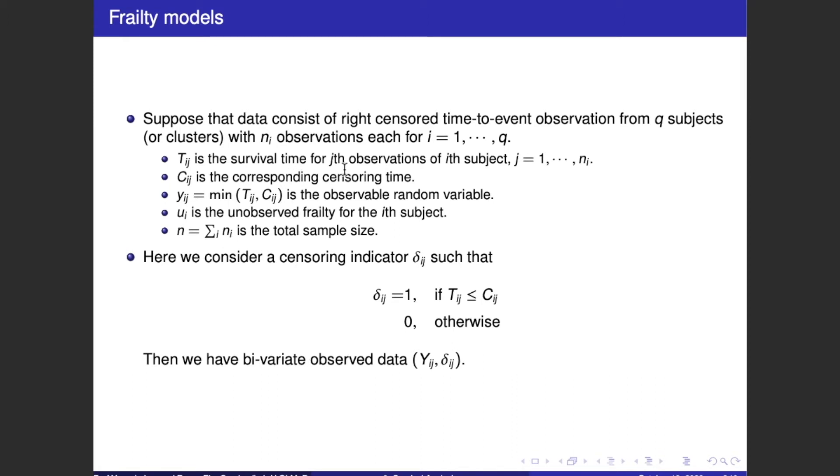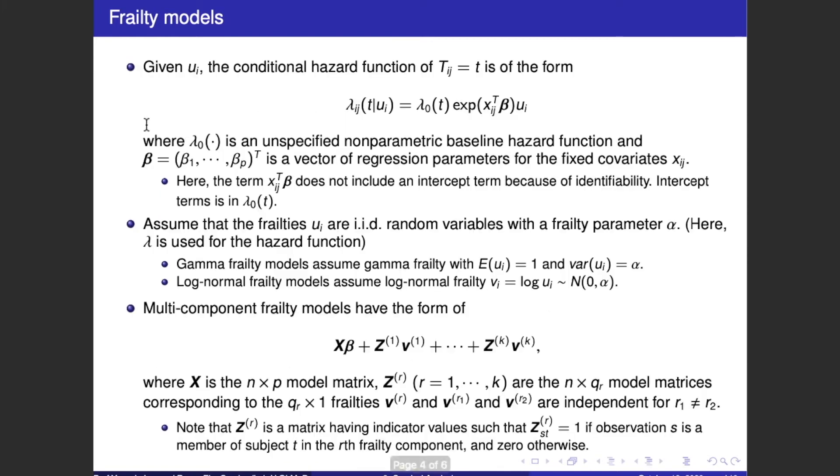Here, you can consider a censoring indicator delta_ig such that delta_ig equals 1 if T_ig less than or equal to C_ig, and 0 otherwise. Then, we have bivariate observed data Y_ig and delta_ig.